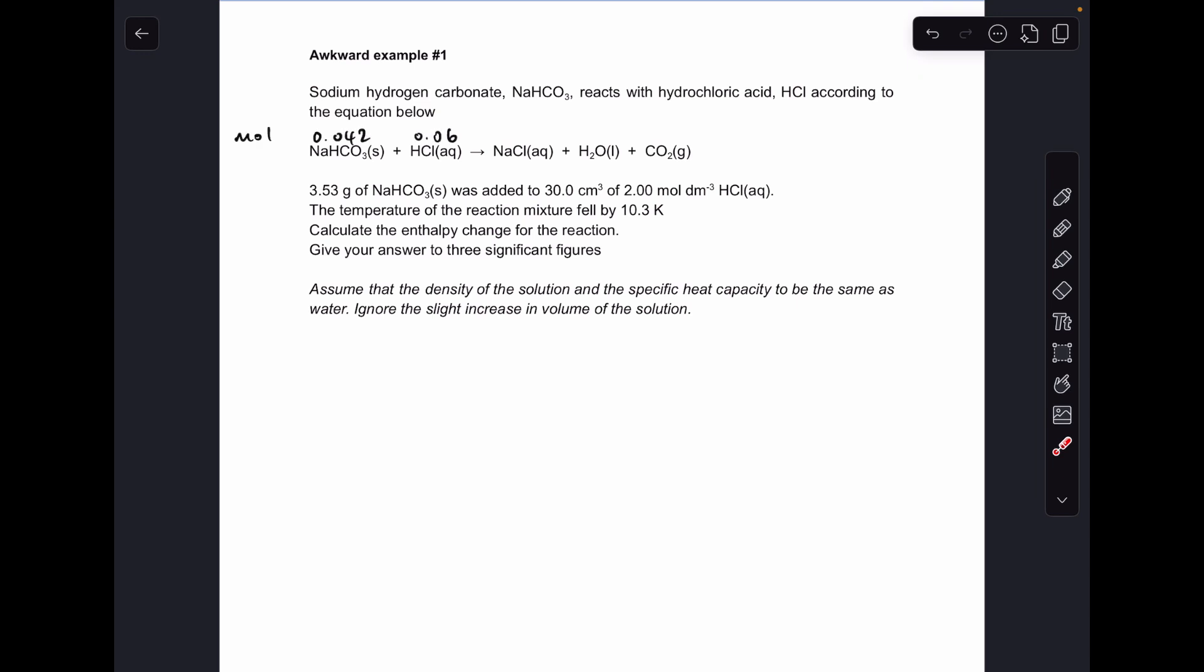So the moles of sodium hydrogen carbonate first, mass over the MR of sodium hydrogen carbonate, which is 84, gives a moles value of 0.042 and the moles of HCl concentration times volume. Remember that's going to be in decimeters cubed. 0.06. Really easy to see which is the excess chemical because they're reacting in a one-to-one ratio. So it's basically the biggest number. The HCl is in excess and so therefore all of the sodium hydrogen carbonate will react and 0.042 moles of HCl will react.